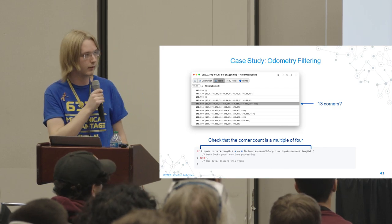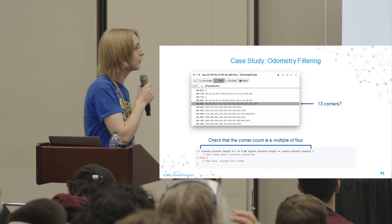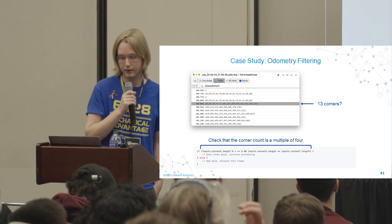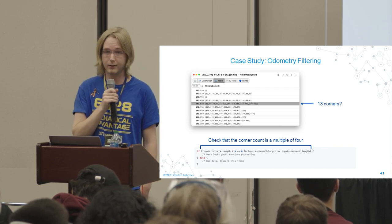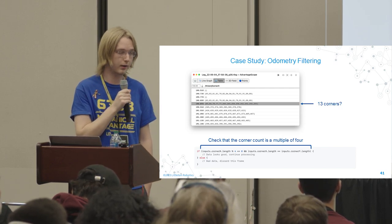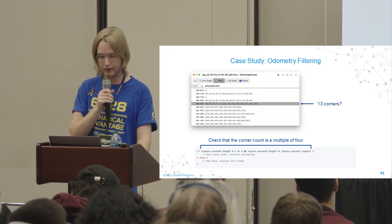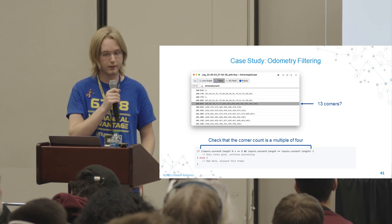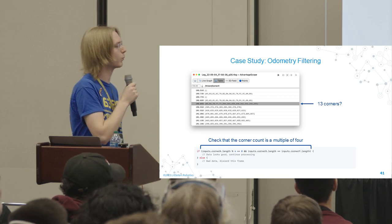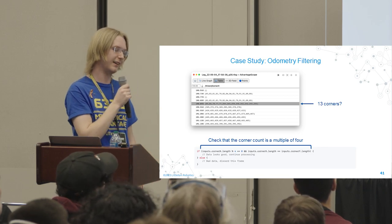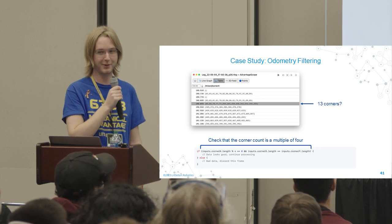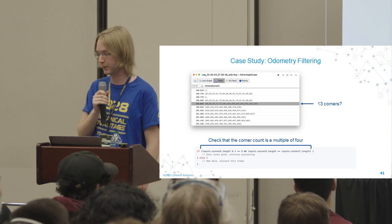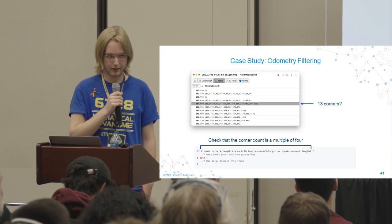In the table view we can look at the set of X-coordinates logged for all of the corners. In this particular instance there are 13 corners listed. We're looking for rectangular pieces of tape, so we should always expect the number of corners to be a multiple of 4 — 13 is clearly not.